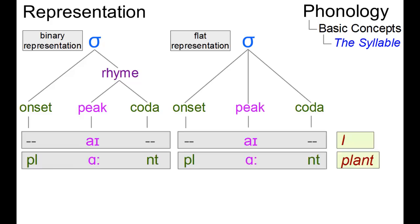In plant we have two consonants in the onset position, a peak and two consonants as coda.